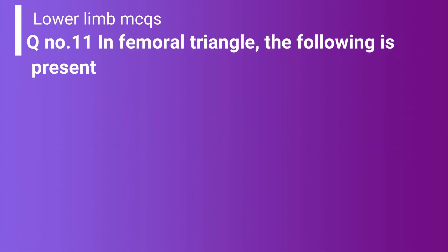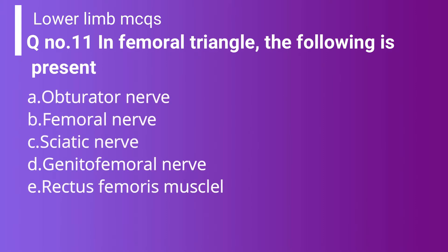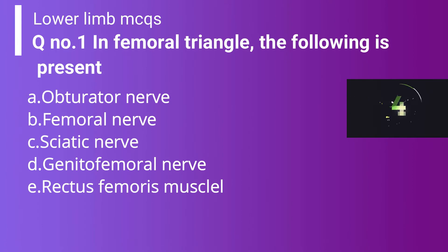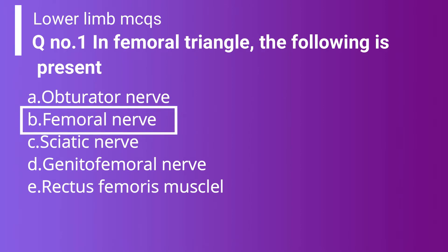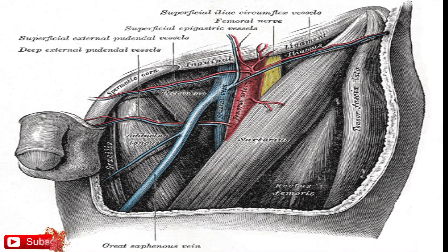Question 11: In the femoral triangle, which of the following is present? Option A: Obturator nerve. Option B: Femoral nerve. Option C: Sciatic nerve. Option D: Genitofemoral nerve. The correct answer is Option B — femoral nerve. The rest of the options are false because they are not present in the femoral triangle. The contents of the femoral triangle are the femoral artery, femoral vein, and femoral nerve.